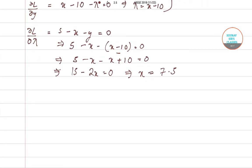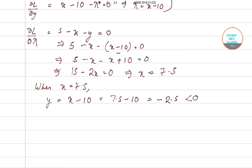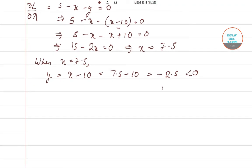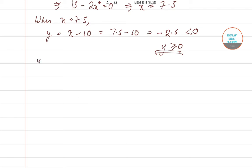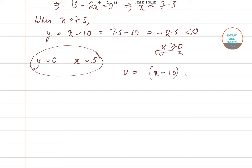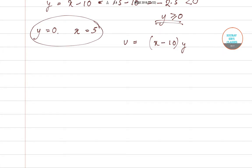Notice a very interesting result: when x = 7.5, we get y = x minus 10 = 7.5 minus 10 = negative 2.5, which is a negative quantity. But our constraint requires y to be greater than or equal to 0. Since y cannot be negative, the most we can do is consume y = 0. When y = 0, we get x = 5. So this is our optimal bundle, giving u = 0.